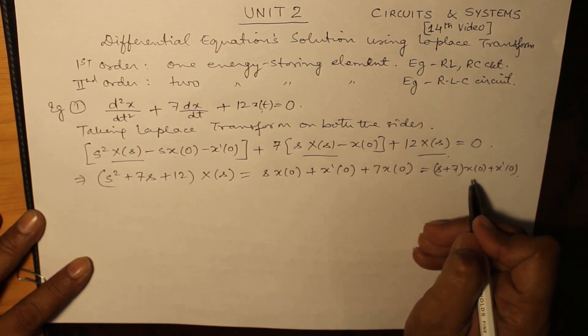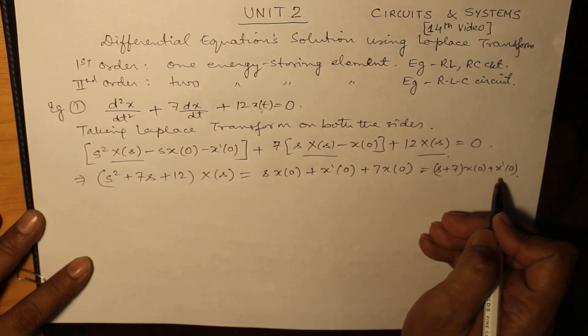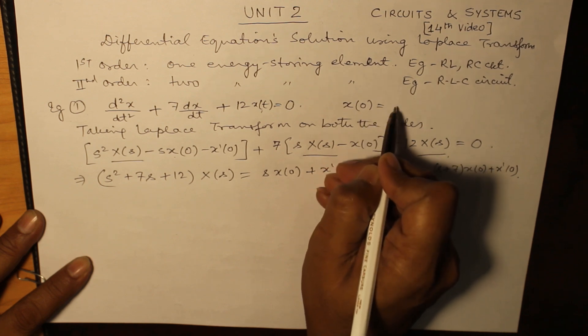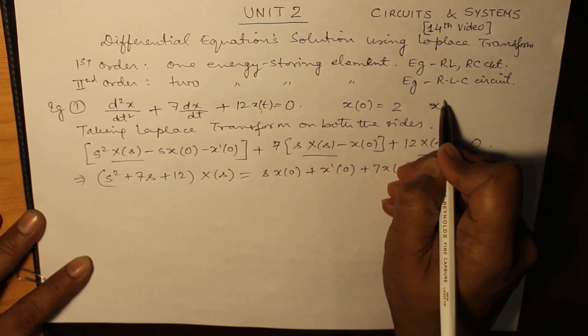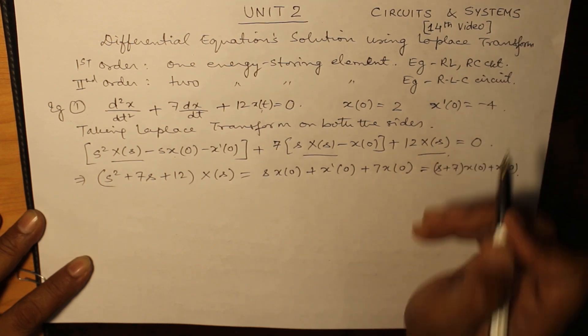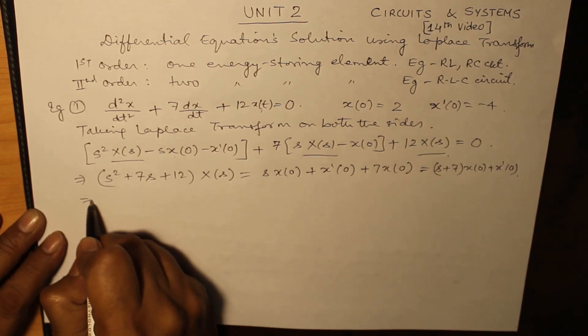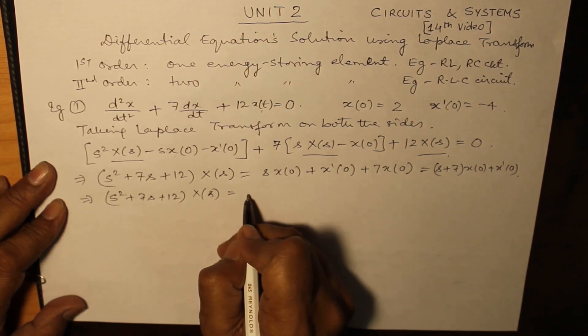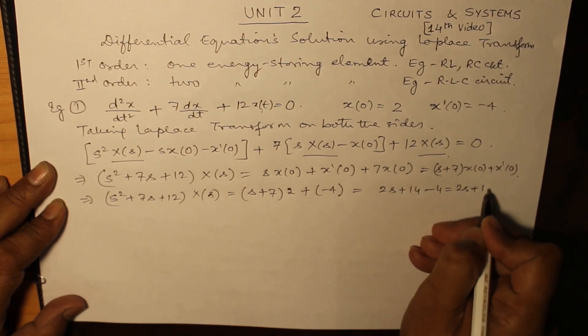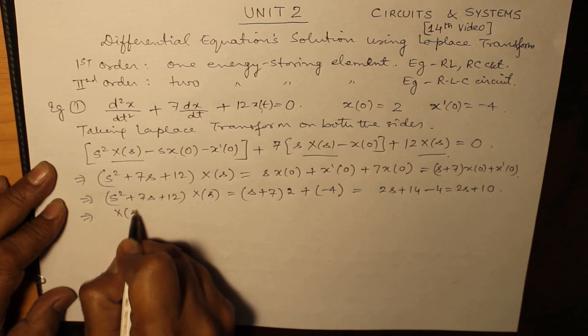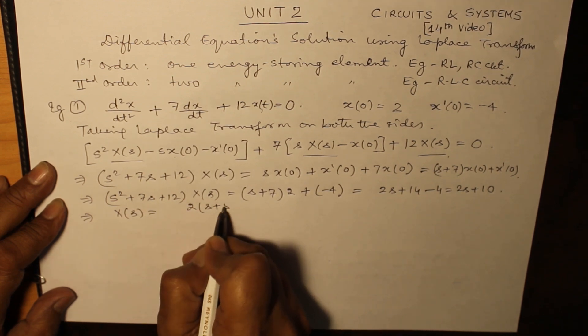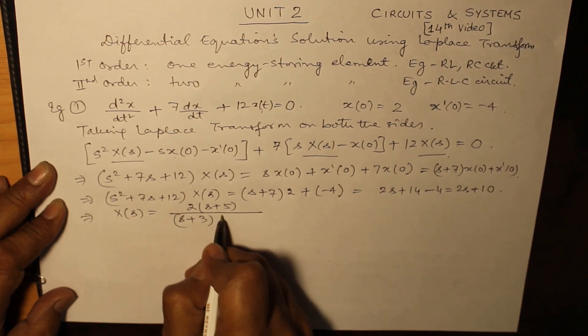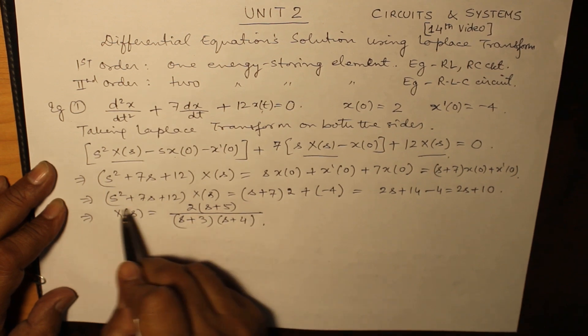Normally in questions the value of x(0) and x'(0) is specified. Let us suppose in this question the value is specified as x(0) = 1 and x'(0) = -4. Putting these values here and writing down the left hand side as it is. Therefore, X(s) is equal to (s + 5) over, taking 2 common, (s + 3)(s + 4). We have factorized s² + 7s + 12.